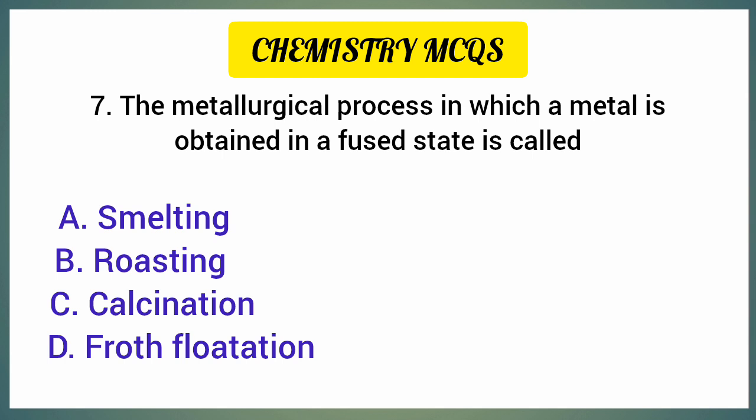The metallurgical process in which a metal is obtained in a fused state is called — correct option is option A: Smelting.